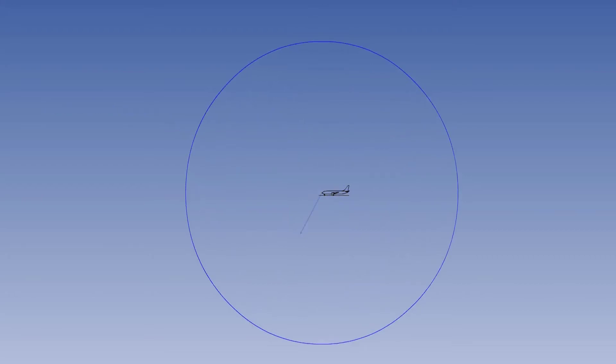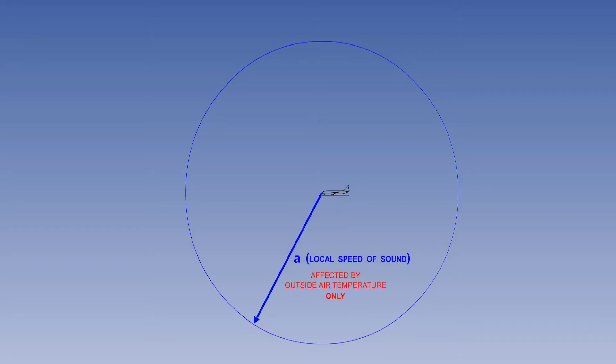In the time between the pressure wave being generated and freezing the picture, the pressure wave moved through the air at a certain speed. The speed of pressure wave propagation is called the local speed of sound, represented by lowercase a. The only thing that will affect the speed of sound is the outside air temperature. The higher the temperature, the higher the speed of sound.